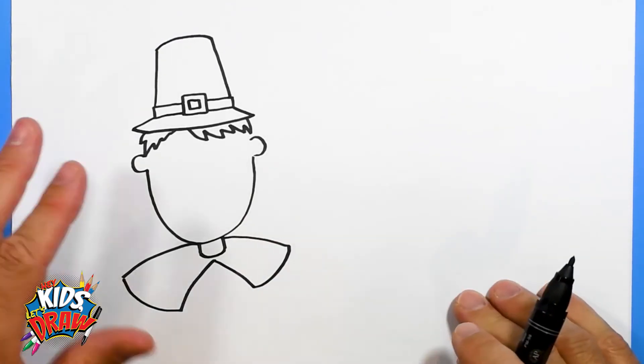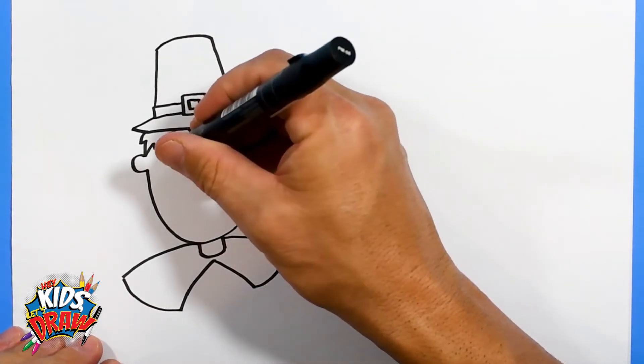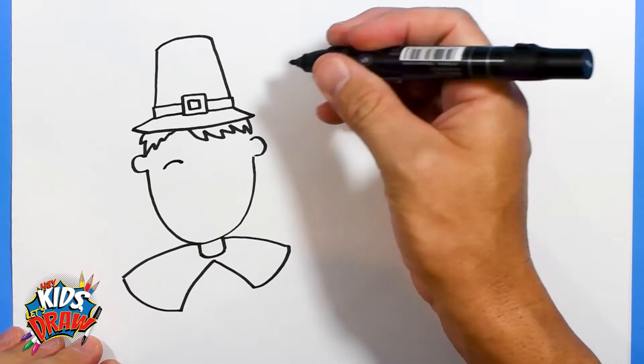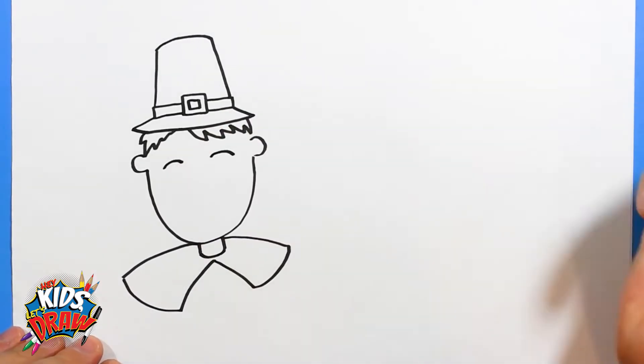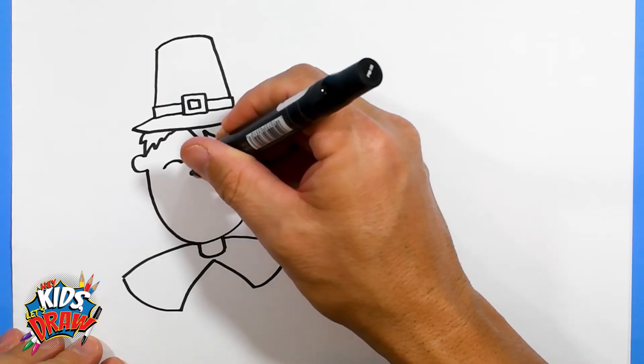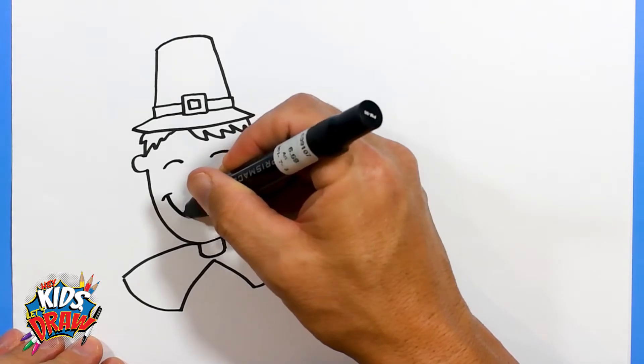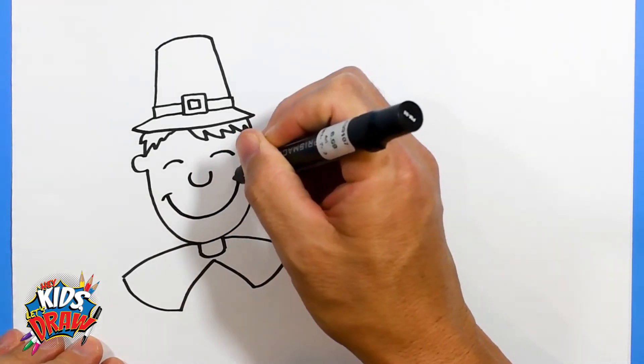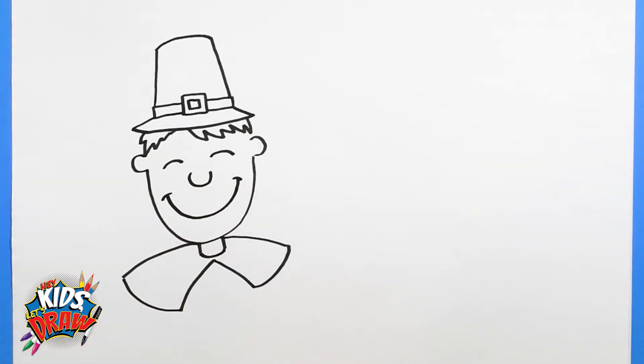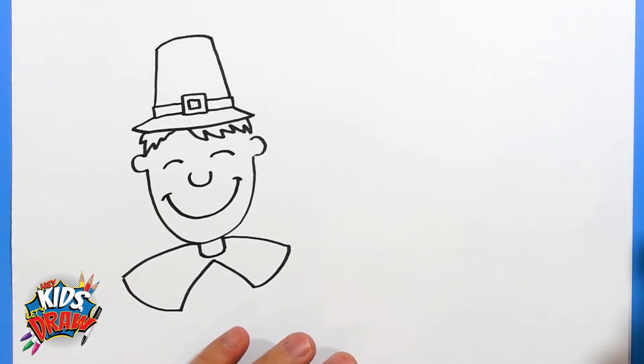And there is our pilgrim outline. We'll do a fun little face, a smiley face, two eyes, kind of rainbow eyes like that, a simple nose and a big giant smile. Easy, okay. There's our pilgrim boy. Now let's do the girl.